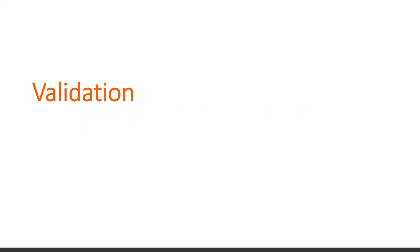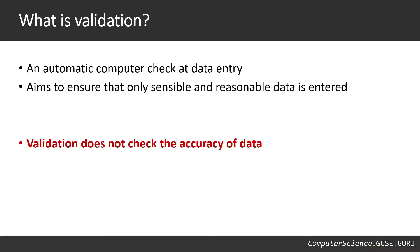Let's start by looking at validation first. So what is validation? Well, validation is an automatic computer check at the point of data entry. Validation aims to ensure that only sensible and reasonable data is entered into the system. Validation does not check the accuracy of the data being entered, and that's something really important to remember and we're going to come back to that in a short while.